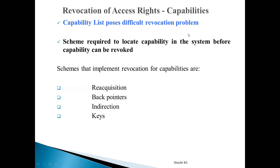Throughout the system you have to search for the capability and only then can you revoke the access rights represented in it. Because searching is difficult and we have to search the entire system, revocation is a difficult task in capability-based list representation. So when doing revocation in a capability-based list, there are four different types of schemes: reacquisition, back pointers, indirection, and keys.